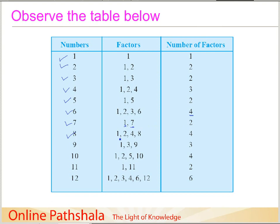For number 8, the factors are 1, 2, 4, and 8 — so 4 factors. For number 9, the factors are 1, 3, and 9 — giving 3 factors. For number 10, the factors are 1, 2, 5, and 10 — so 4 factors. For number 11, the only two factors are 1 and 11 itself — just 2 factors. And for number 12, all its factors are listed, giving a total of 6 factors.